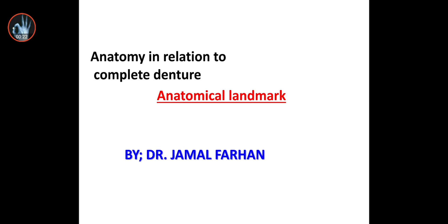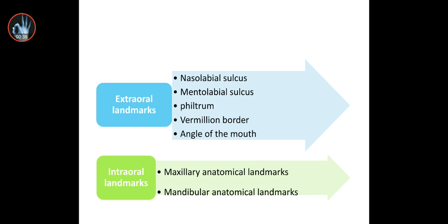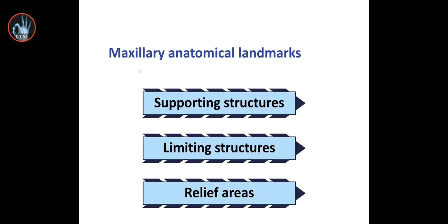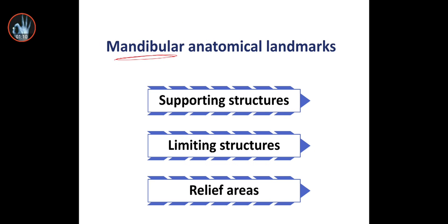We'll be talking about the mandibular landmarks. We already covered the previous lectures on the anatomical landmark of the complete denture. We described the anatomical landmark and its definition and said that there are two types: extra-oral and intra-oral. In the first lecture we talked about the extra-oral anatomical landmark, and in the previous lectures we covered the maxillary anatomical landmark.